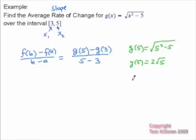And g of 3 is going to give us the square root of 3 squared minus 5. 3 squared being 9, 9 minus 5 is 4. So the square root of 4 is just going to be 2. So g of 3 is just equal to 2. And then we can come back over here and substitute it in.